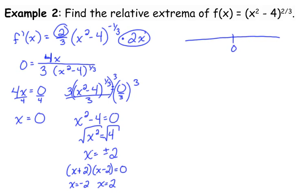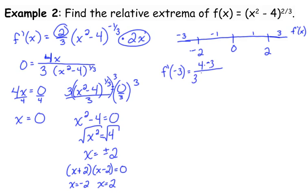Number line with critical numbers negative 2, 0, and positive 2. We need four test values — you always need one more test value than critical numbers. I'll pick the simplest numbers: negative 3, negative 1, positive 1, positive 3. I'm going to plug those into my derivative. I don't need to completely compute the exact value — the question is just whether it's positive or negative. When we plug in negative 3, the numerator is negative because it's 4 times negative 3. The denominator: I square negative 3 to get positive 9, then 9 minus 4 is 5 — I don't care what the cube root of 5 is, I just know it's positive.